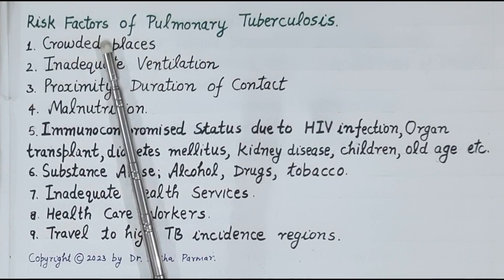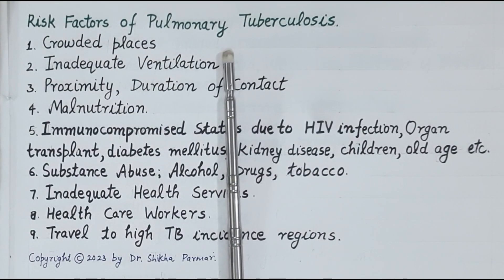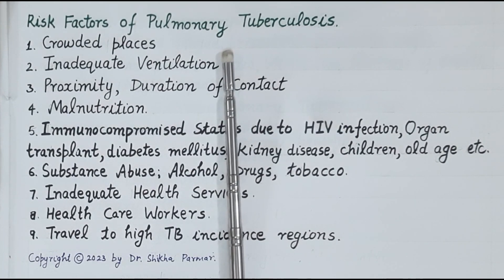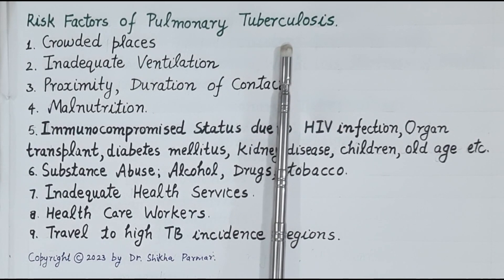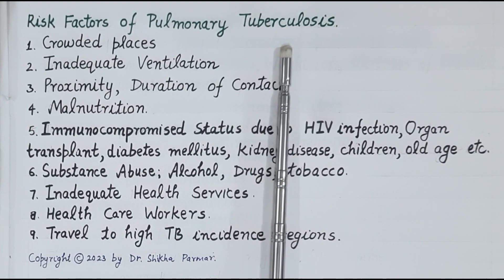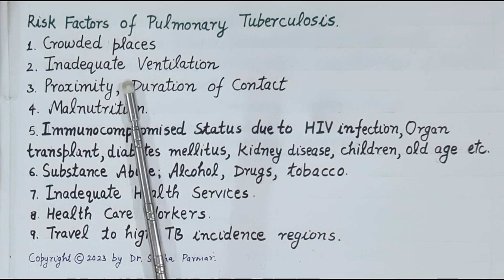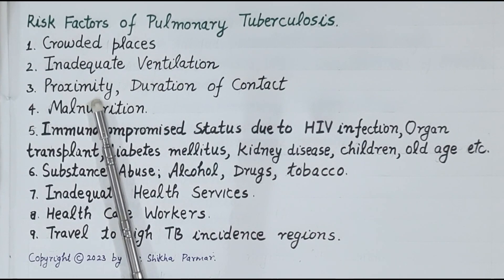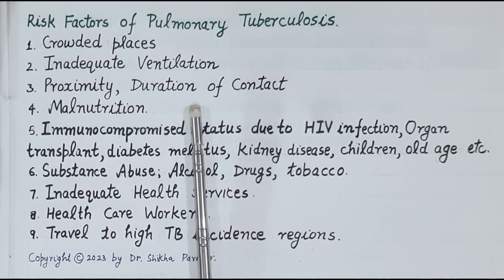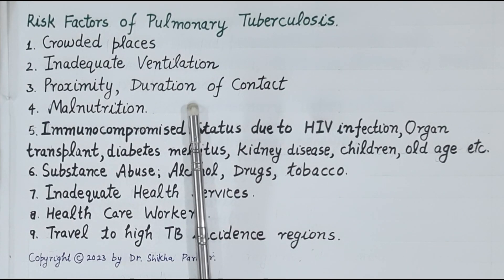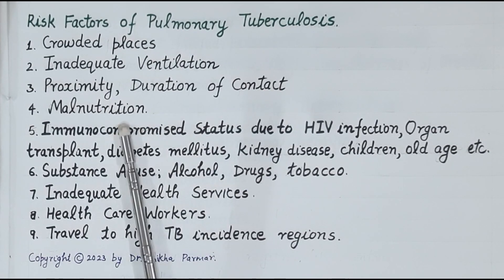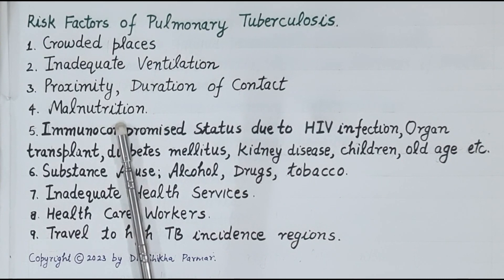Now let's study the risk factors that increase the chances of getting infected with pulmonary tuberculosis. Since TB is an airborne disease and Mycobacterium tuberculosis remains suspended in air for several hours, crowded places and inadequate ventilation increase the risk of infection. Proximity — closeness — and duration of contact with the infected individual are other important risk factors. Malnutrition impairs immunity and increases the risk of tuberculosis.